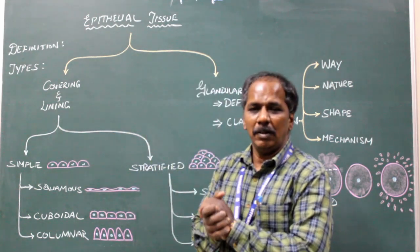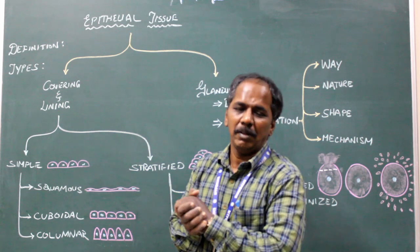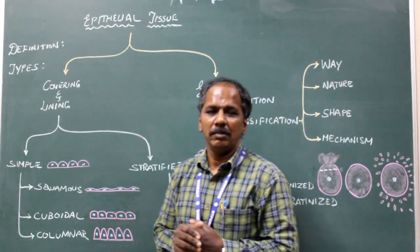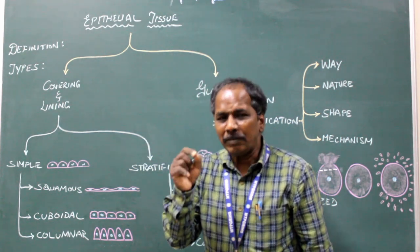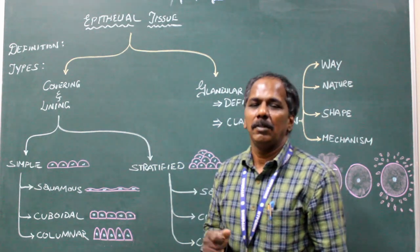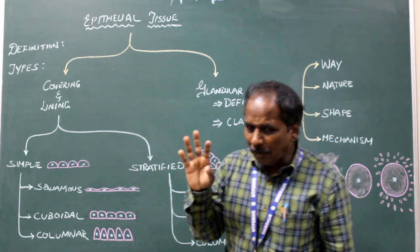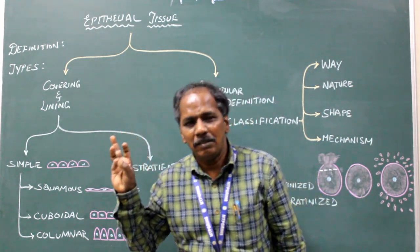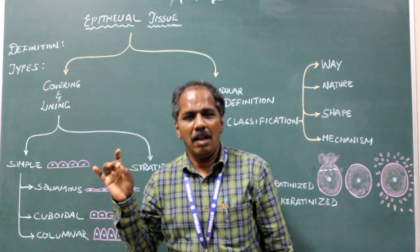Good morning. Today we are going to see tissues, the first chapter of anatomy. What is tissue? A group of cells performing similar function constitutes tissue. There are four types of tissue: epithelial tissue, connective tissue, muscle tissue, and nerve tissue.